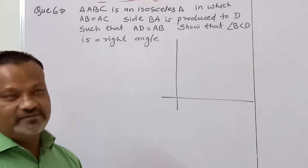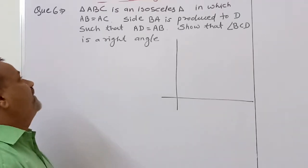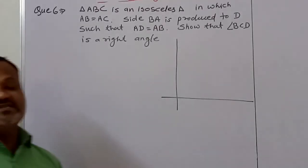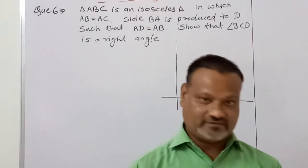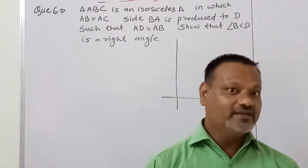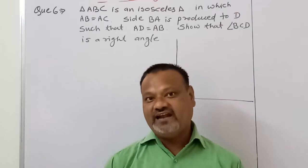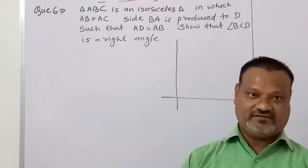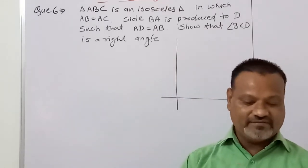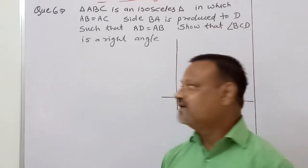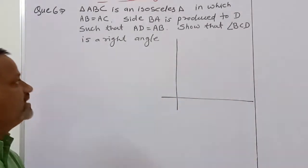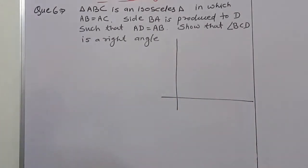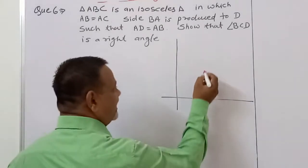Good morning students. In the previous video we already discussed question numbers 2, 3, and 5 from the 2nd and 3rd layers. From question numbers 6, 7, and 8 we will work in this video. ABC is an isosceles triangle.